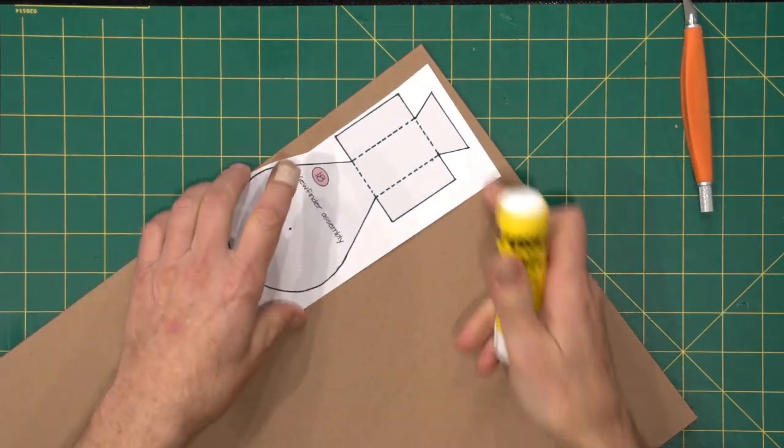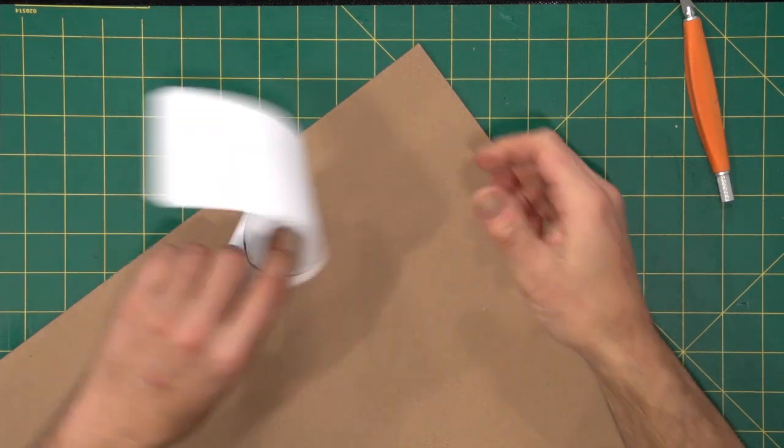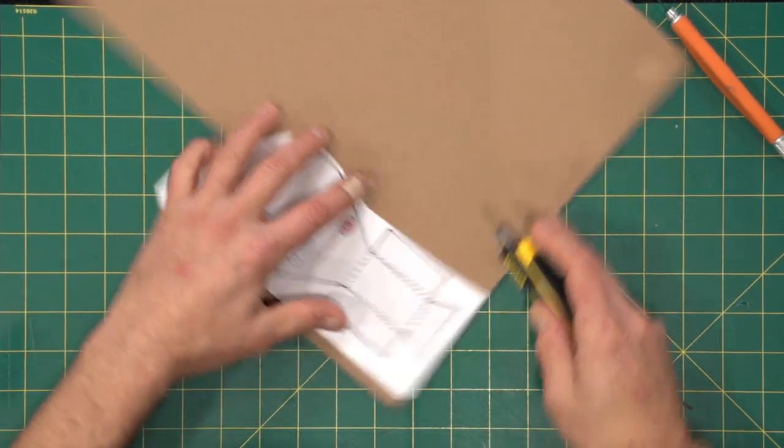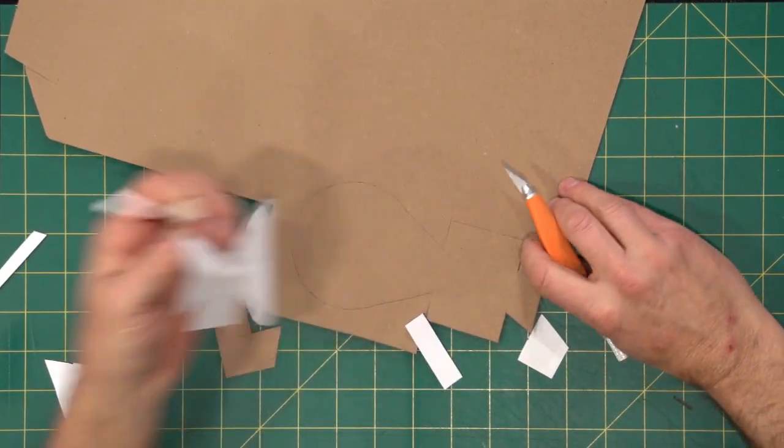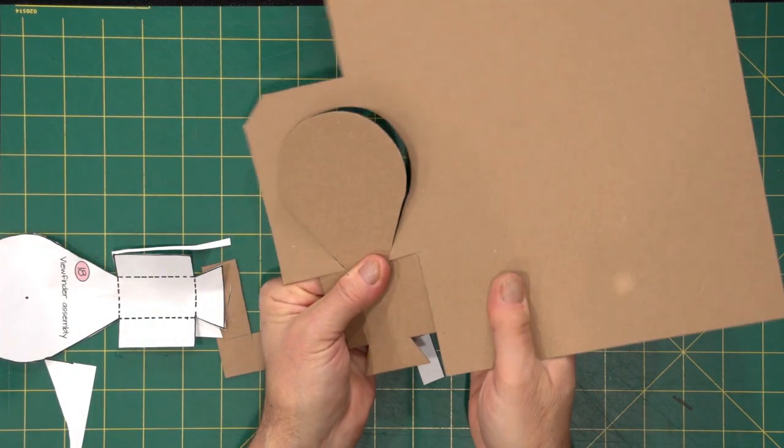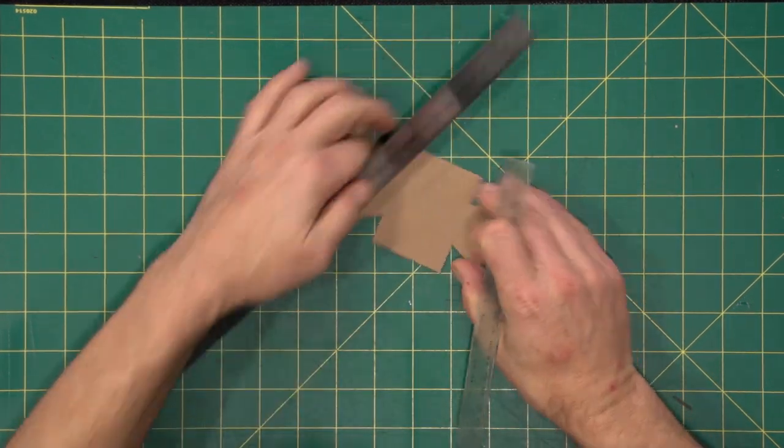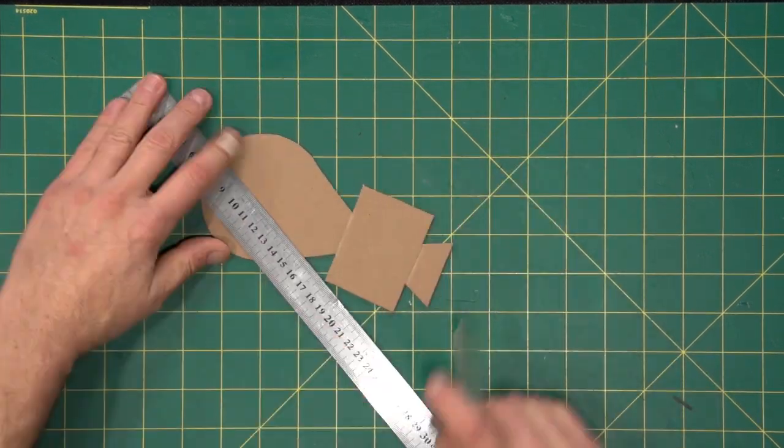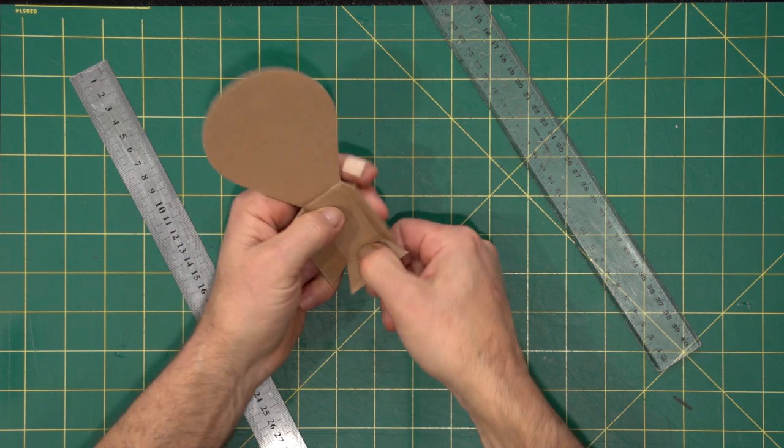We'll start off by creating the viewfinder assembly. I find an easy way to do that is to put a bit of sticky on the back of the template and simply cut around it. Once you've got it cut out, just score along the dotted lines indicated on the template. I used a plastic ruler. That seems to work well. And you can see we get nice clean folds. We'll come back to the viewfinder assembly later.